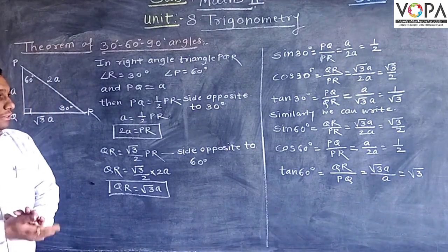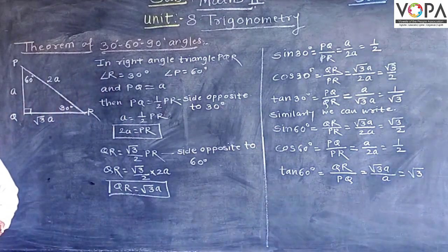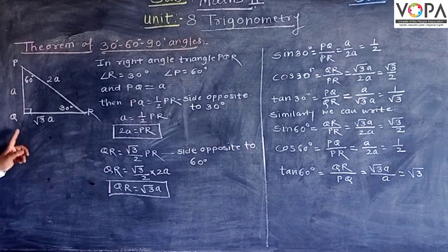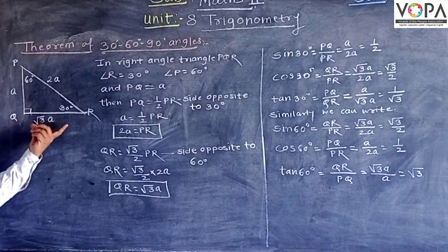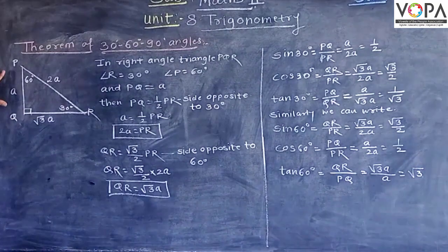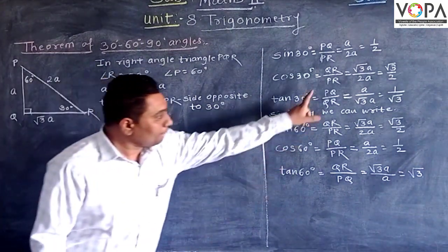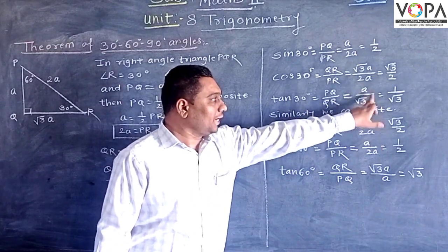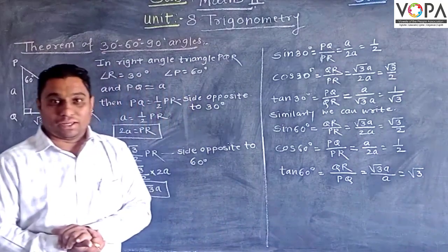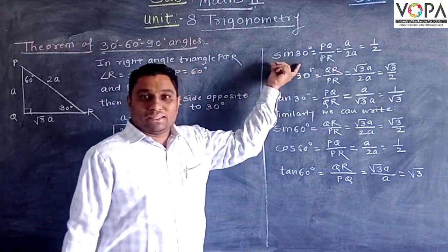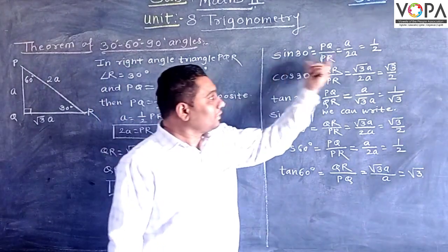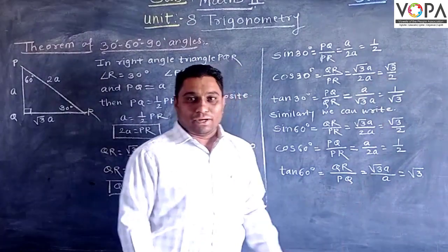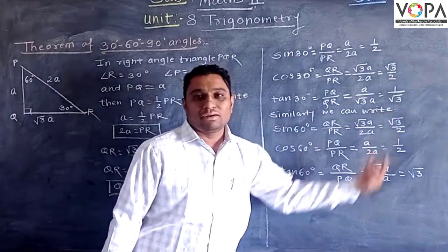In a similar way, the value of tan 30 degree — the ratio of tan is opposite side upon adjacent side. So PQ upon QR: putting in the values, a upon √3a — the a's get cancelled — and the value is 1 upon √3. This means sine 30 degree is equal to 1/2, cos 30 degree is equal to √3 by 2, and tan 30 degree is equal to 1 upon √3.